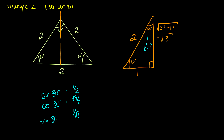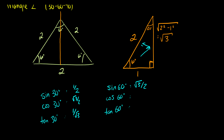We also need the 60-degree values. Sine of 60° is opposite over hypotenuse, which is √3/2. Cosine of 60° is adjacent over hypotenuse, which is 1/2. And tangent of 60° is opposite over adjacent, which is √3/1 = √3. Notice that sin(30°) and cos(60°) are the same, and cos(30°) and sin(60°) are the same — which is true from other trig relationships you've probably seen in grade 10.